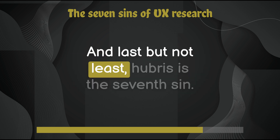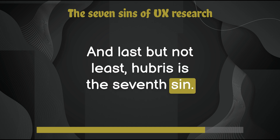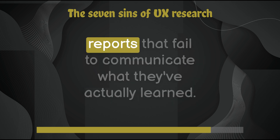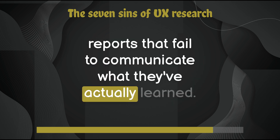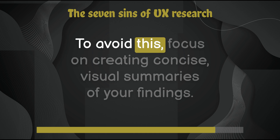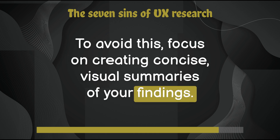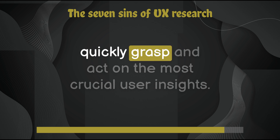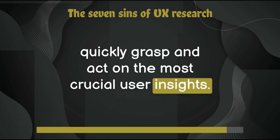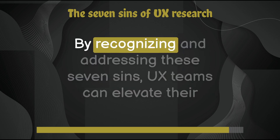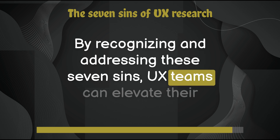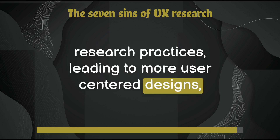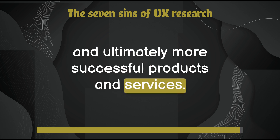Last but not least, hubris is the seventh sin. It's the excessive pride researchers take in producing lengthy, complex reports that fail to communicate what they've actually learned. To avoid this, focus on creating concise visual summaries of your findings — information radiators that make it easy for teams to quickly grasp and act on the most crucial user insights. By recognizing and addressing these seven sins, UX teams can elevate their research practices, leading to more user-centered designs and ultimately more successful products.